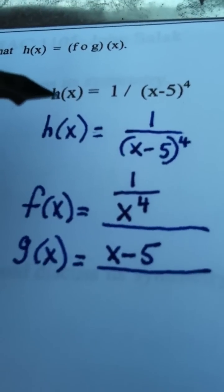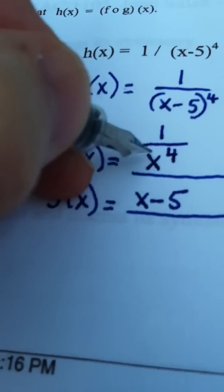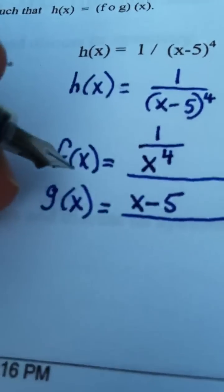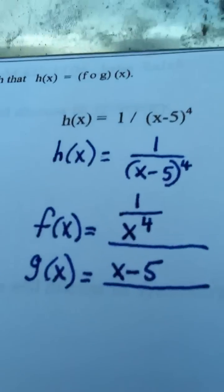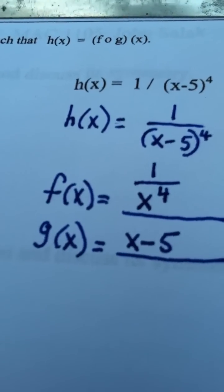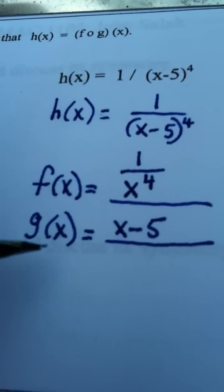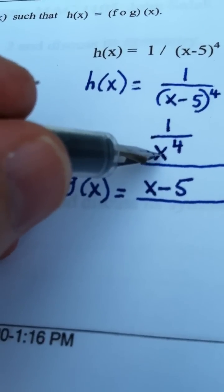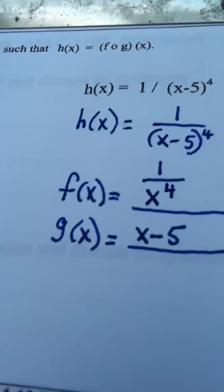So again, what I've taught you in class, this x right here is really not an x. This x is a placeholder for anything you're feeding this function. And if you wanted to test this out, it would work very well. If you put x minus 5 in the place of this, you would come up with 1 over x minus 5 all raised to the fourth.